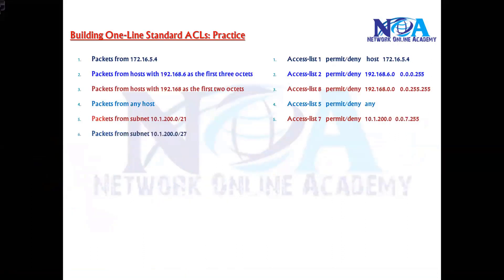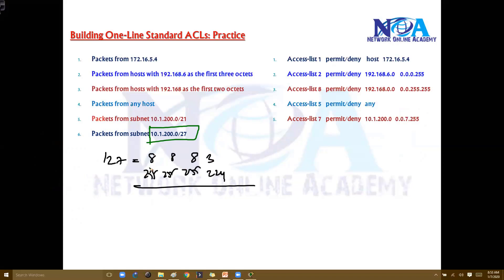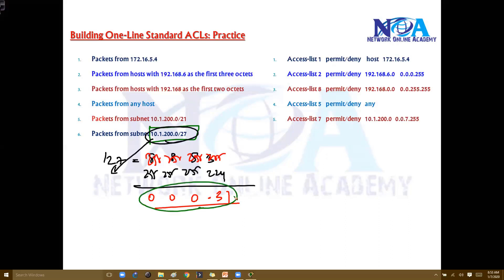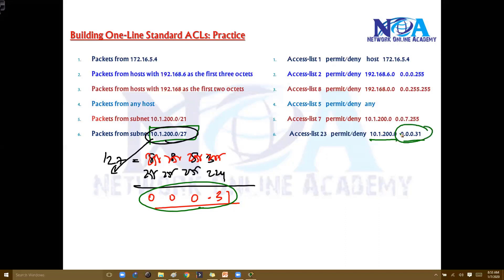Similarly, if you are using a /27 subnet in your network, we need to calculate the wildcard mask. First find the subnet mask: /27 means 255.255.255.224. Then subtract from all 255s: 255.255.255.255 minus 255.255.255.224 gives 0.0.0.31. So the wildcard mask is 0.0.0.31. The ACL statement is: access-list [any number], permit or deny, then the network ID, then wildcard mask 0.0.0.31.